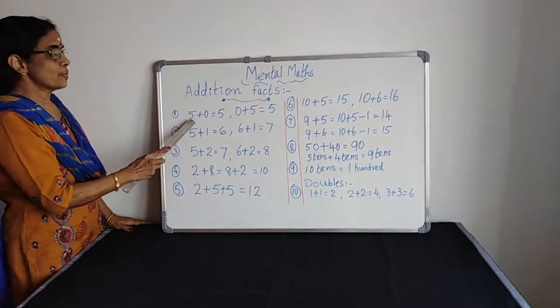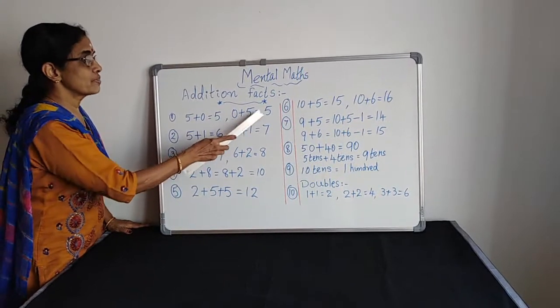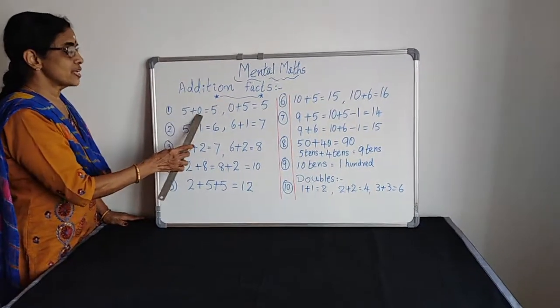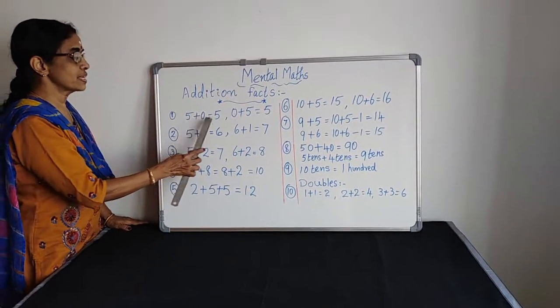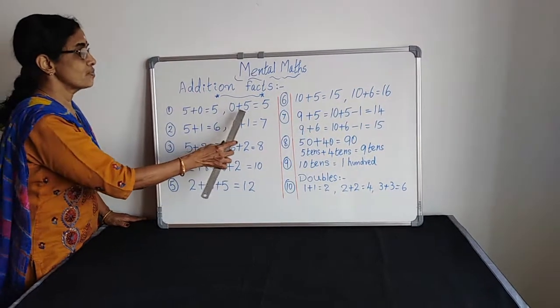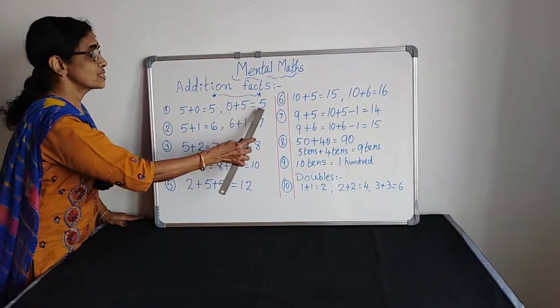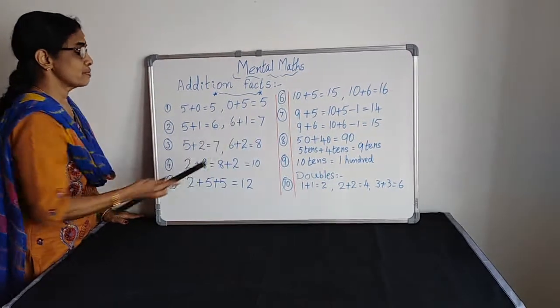First rule: 5 plus 0 equals 5. 0 plus 5 equals 5. When we are adding 0 to any number, we get the same number. In the same way, if we are adding any number to 0, we get the same number.